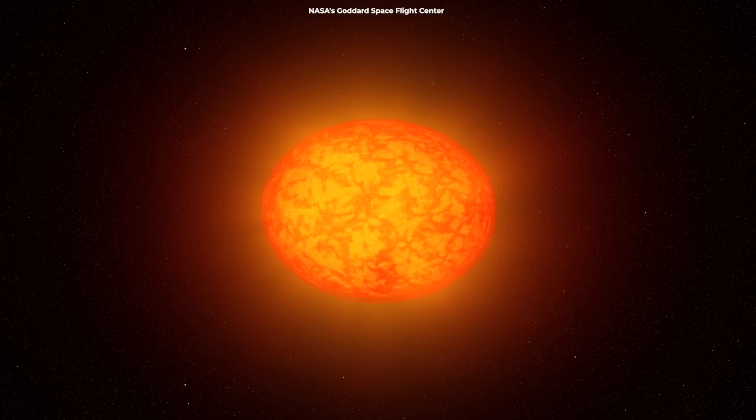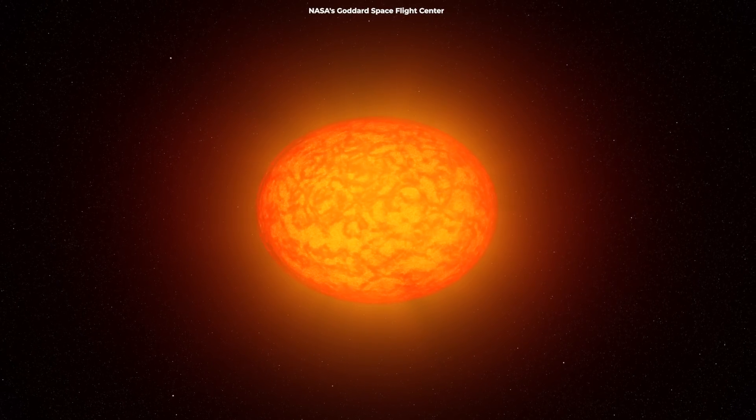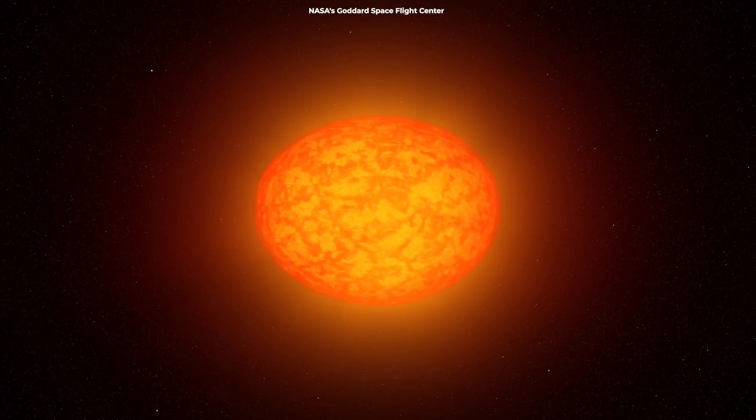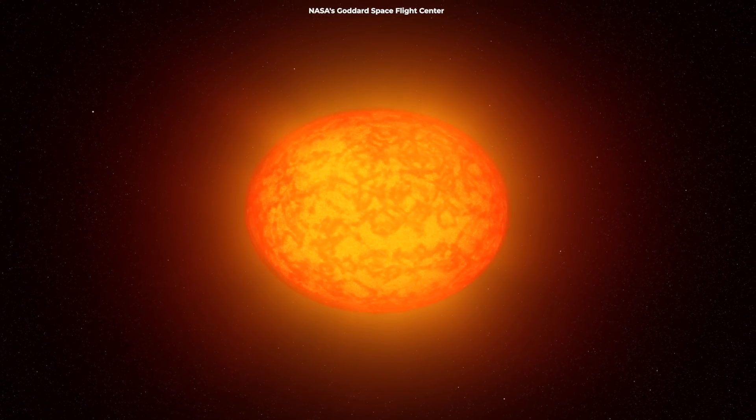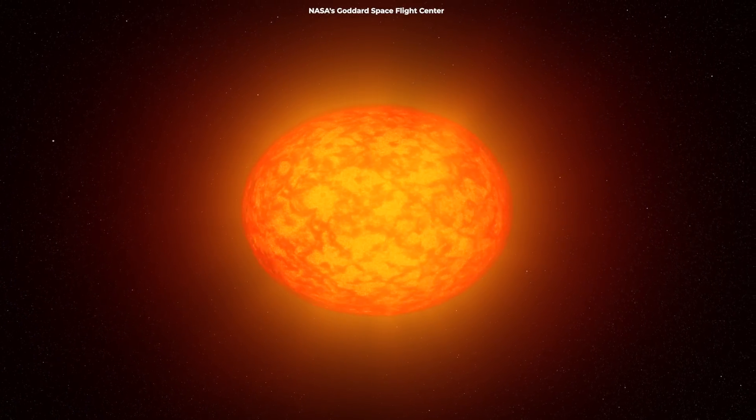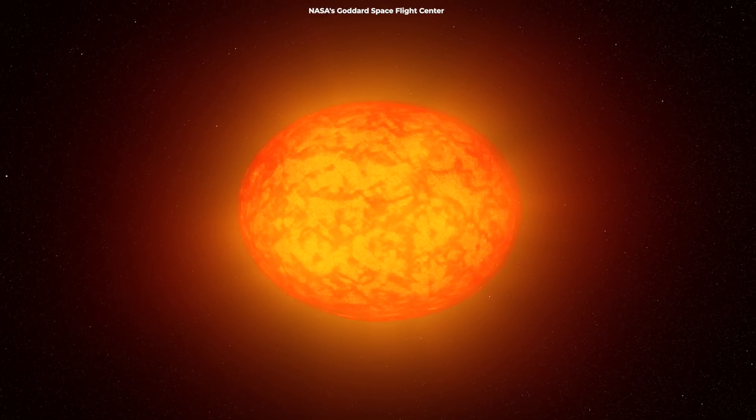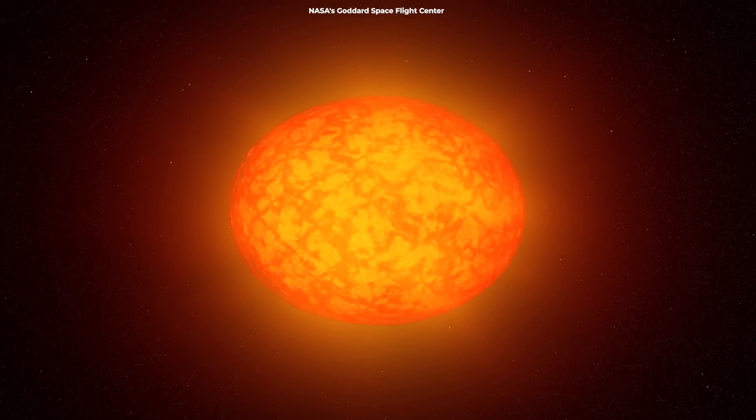But if something spins fast enough, it can get really wild. Some stars spin so fast that their shape warps and stretches. In extreme cases, they could spin so fast that they might even rip themselves apart. Yeah, that's what we call taking things too far.